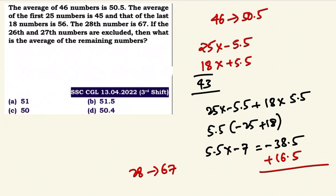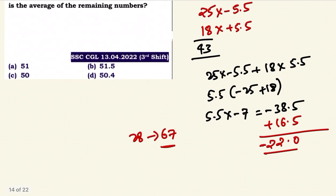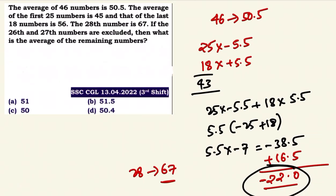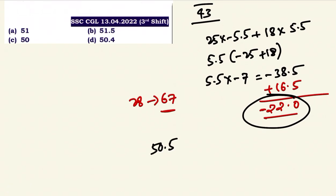The 28th number gives plus 16.5. The remaining — minus 22 — covers the 26th and 27th numbers. So minus 22 is up to the end. There are 46 numbers total, and remaining is 44 numbers. So 44 numbers have a total deviation of minus 22. The remaining average: 50.5 minus something.